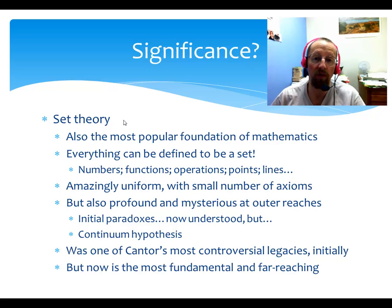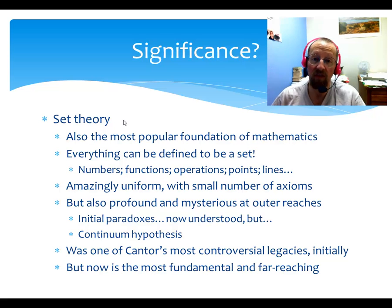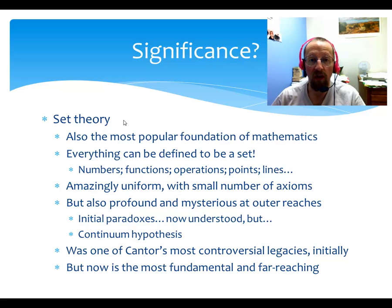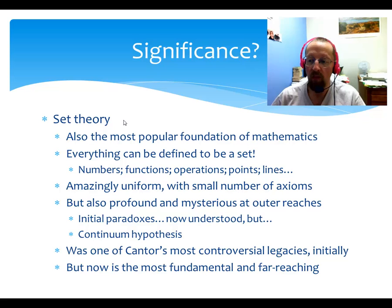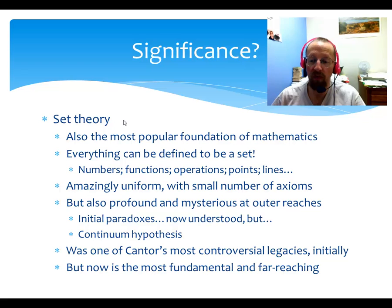For example, the continuum hypothesis is an example of something you would have thought was either true or false, and it turns out you can't say it's true or false. Set theory was one of Cantor's most controversial legacies initially — thought of by many people as absolutely pestilential and a horrible idea. But nowadays it's seen as your best bet for a simple, rational foundation of mathematics and a way of thinking about many mathematical ideas. It's a really fundamental legacy.